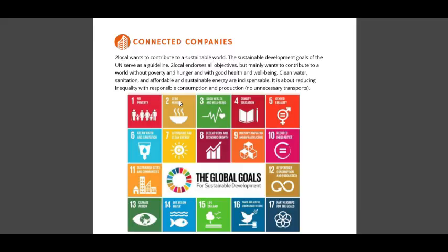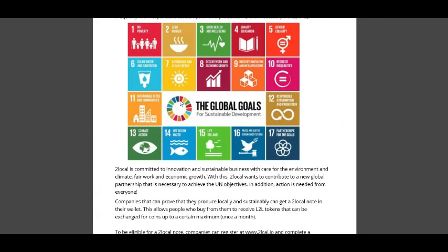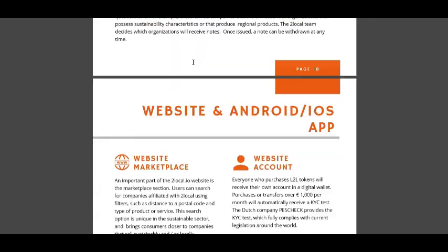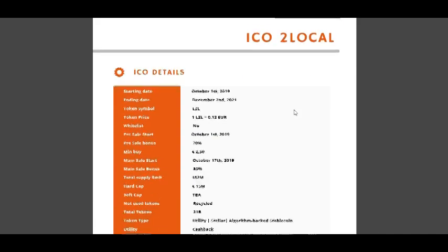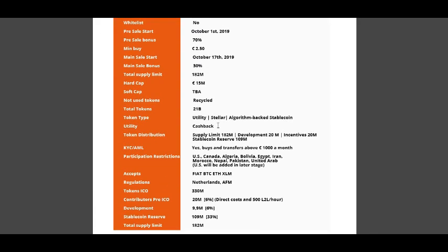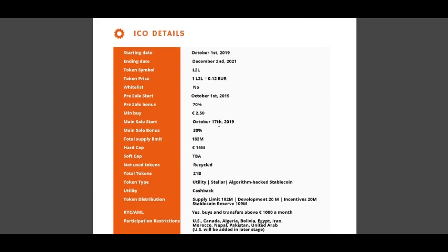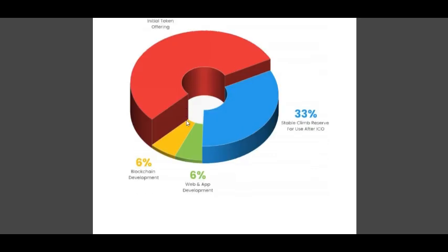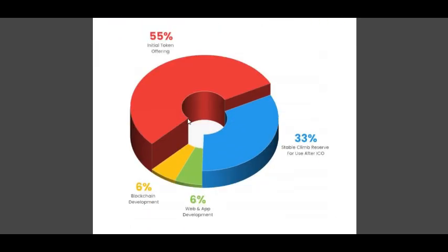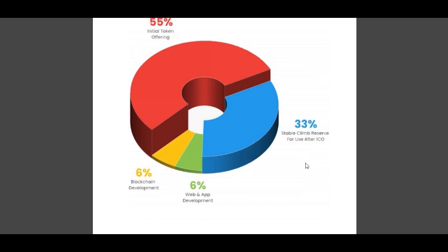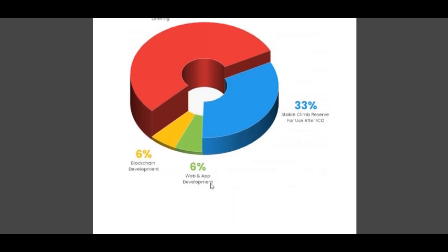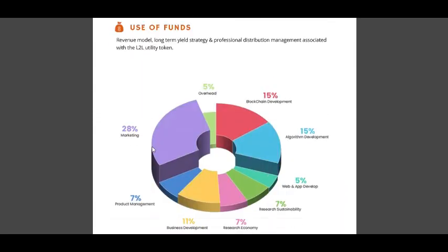Connected companies — more companies connected. Website, ICO local. Here is the ICO date. That is the token sale date. Token allocation: 50% initial token offering, 33% stable reserve for use after ICO. 60% for web and app development, 6% for blockchain development. Fund usage looks like this.